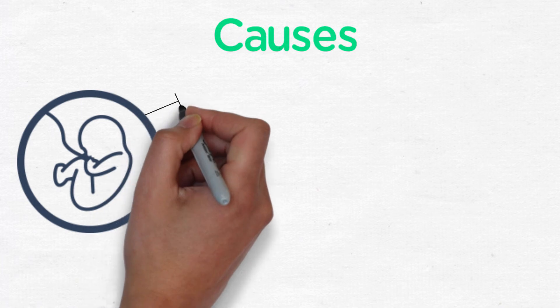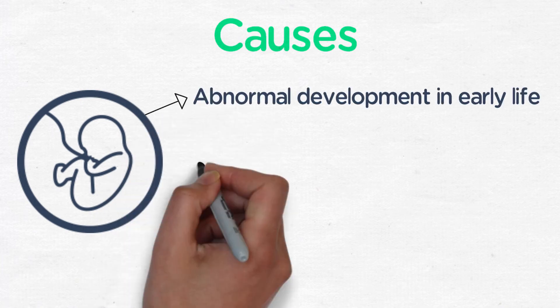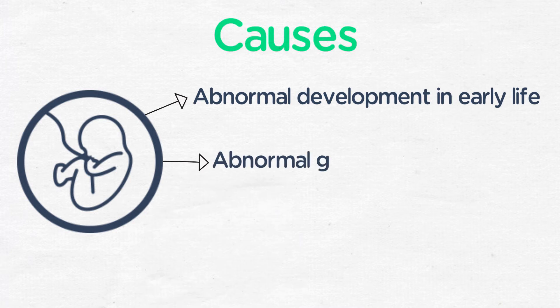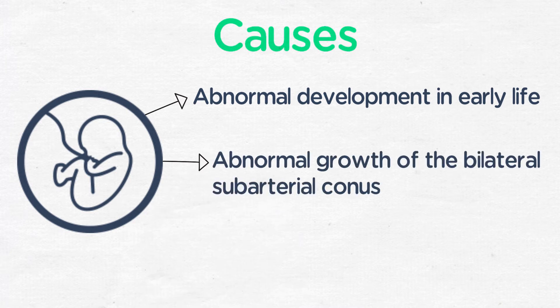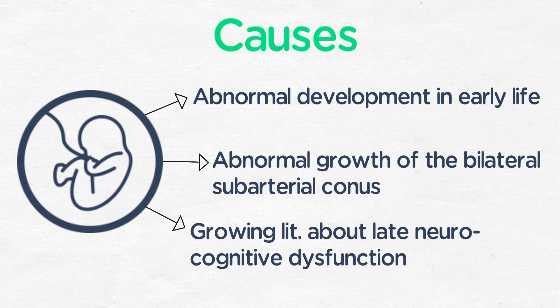Detransposition results from abnormal development early in fetal life, which is thought to be related to abnormal growth and development of the bilateral subarterial conus from early cardiogenesis, though the precise mechanism is not well understood. The growing fetus, which already lives at a low oxygen tension, is not markedly affected, although there is some growing literature about late neurocognitive dysfunction in these patients.